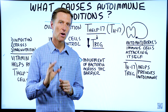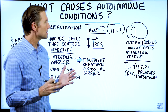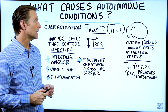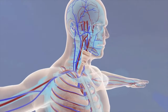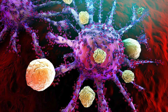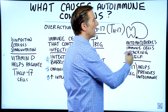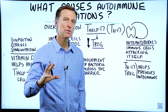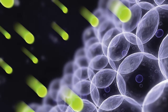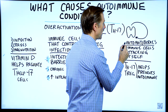Let's talk about what actually causes an autoimmune condition. An autoimmune condition is a situation where your body has created immune cells that are attacking itself, and that creates inflammation. The inflammation creates a lot of collateral damage — it's all those free radicals that end up destroying the tissue. The immune cells that are attacking itself are called autoantibodies.